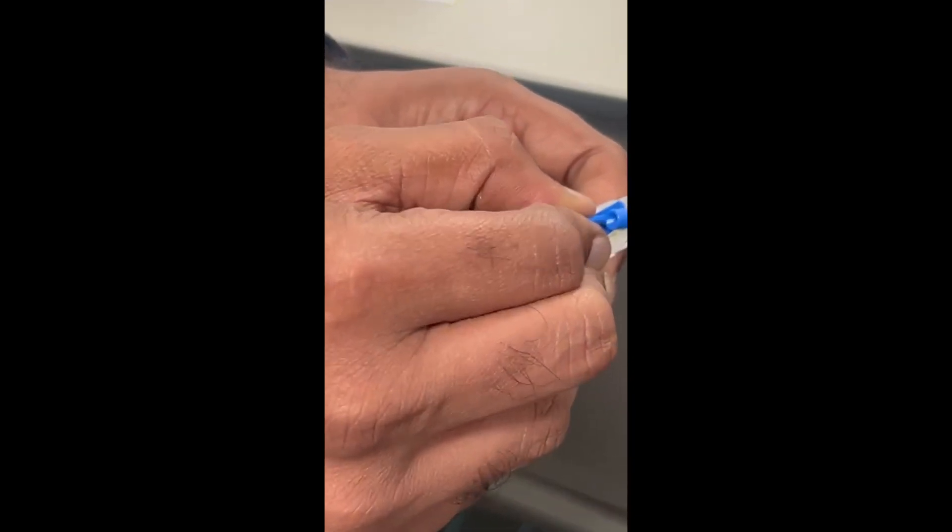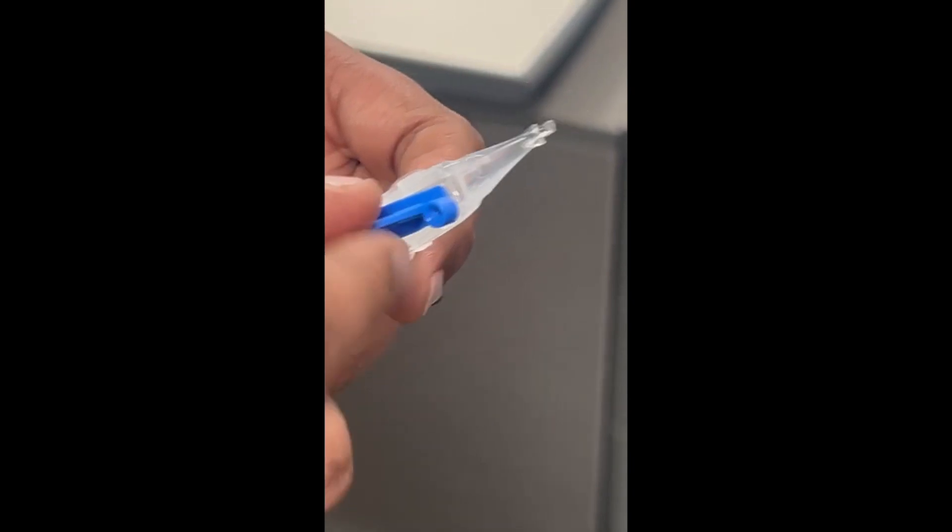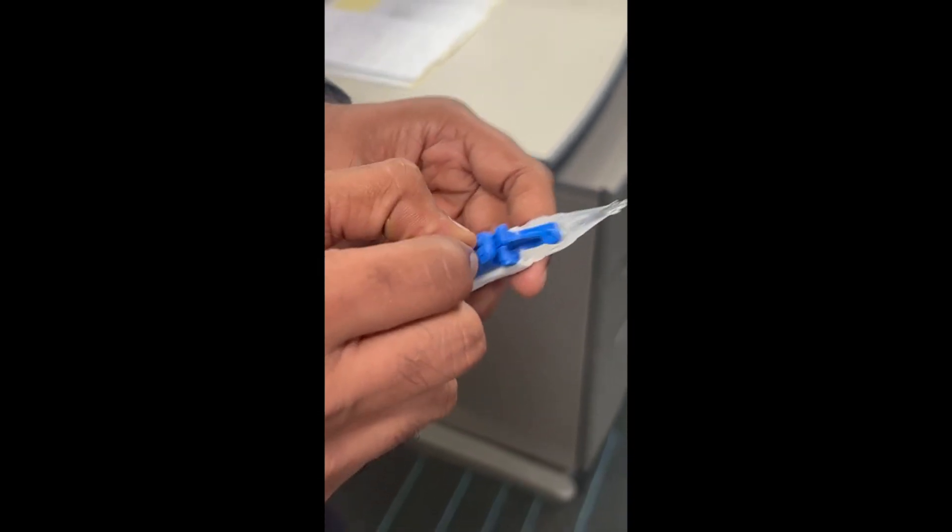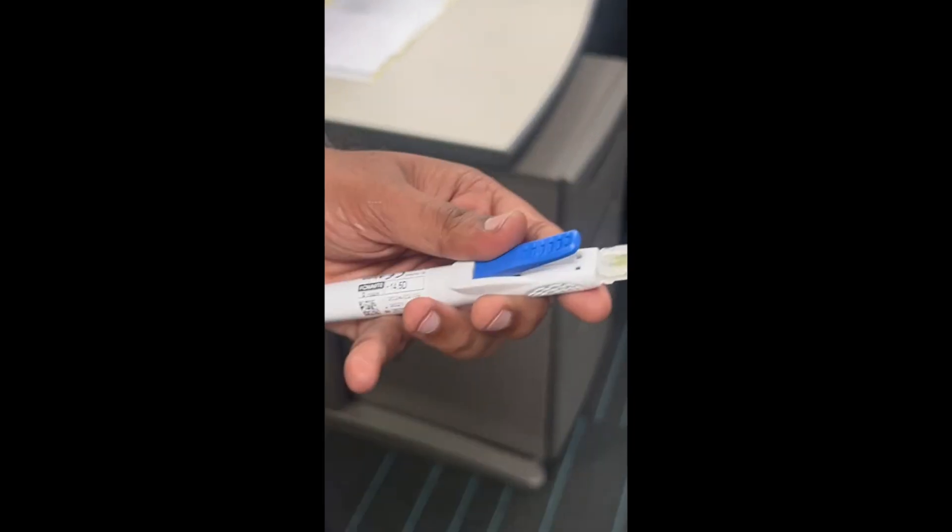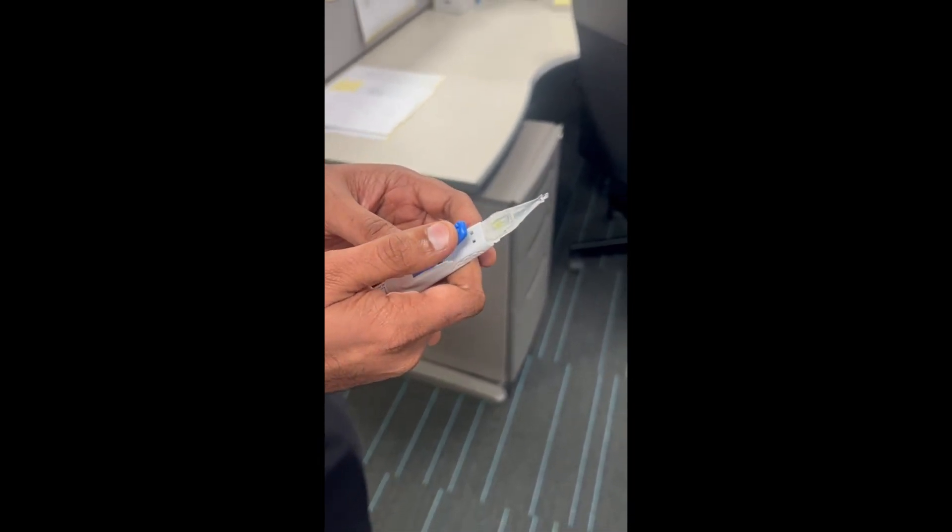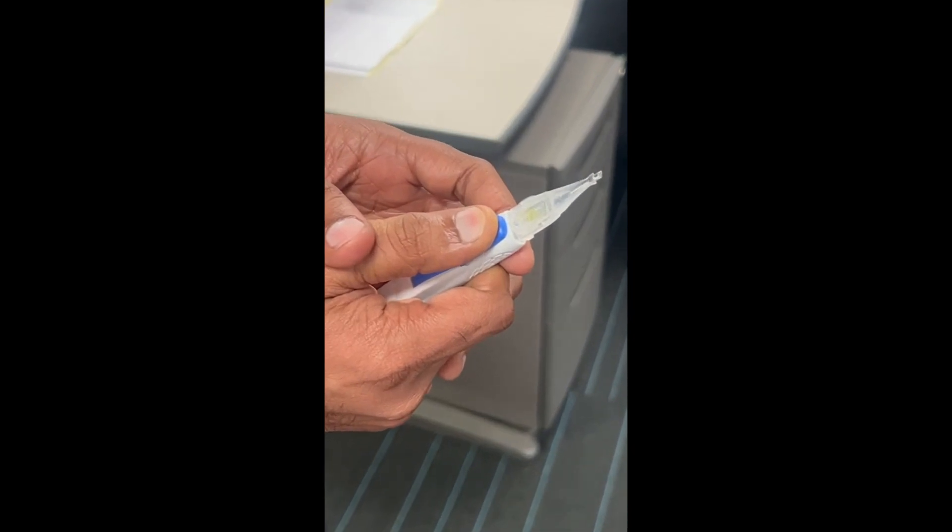After that, we are going to pull this stopper up and then pull it forward, and then this is ready for use. So how to start it? If we press it inside, the plunger is activated.